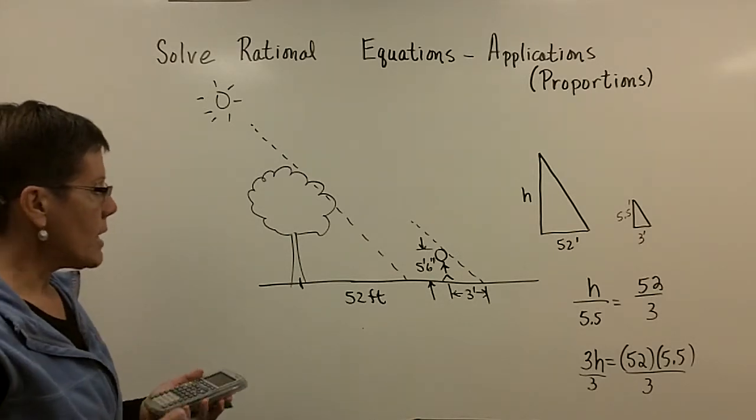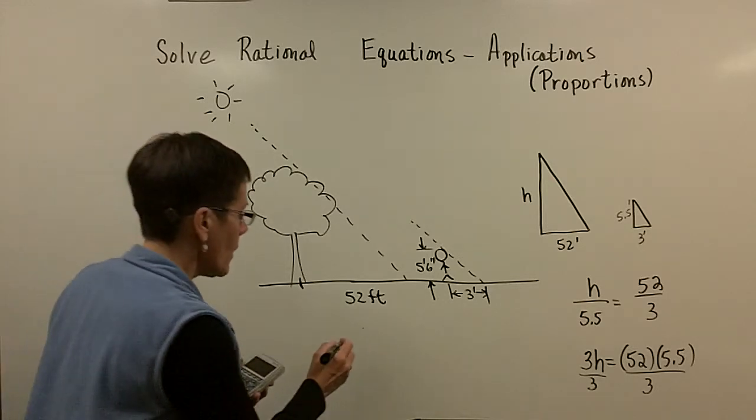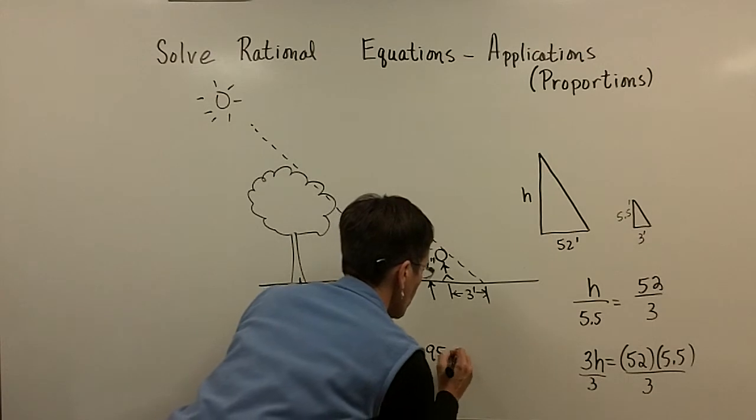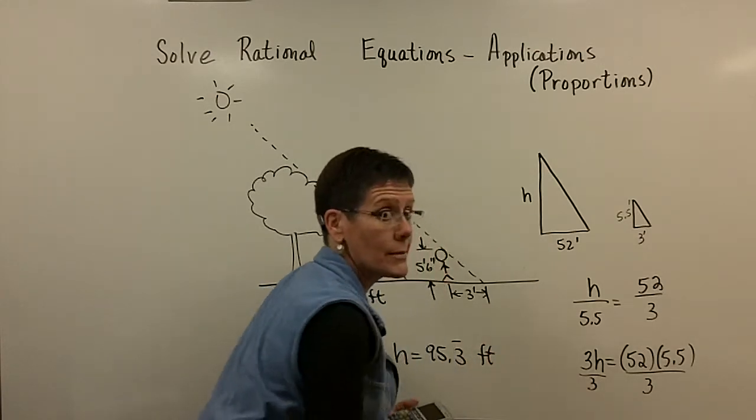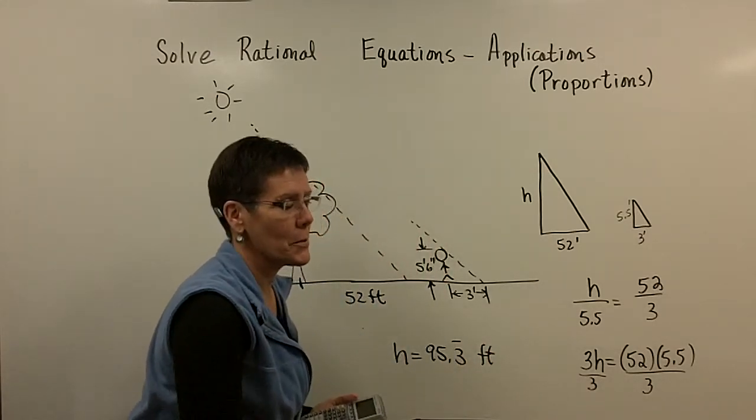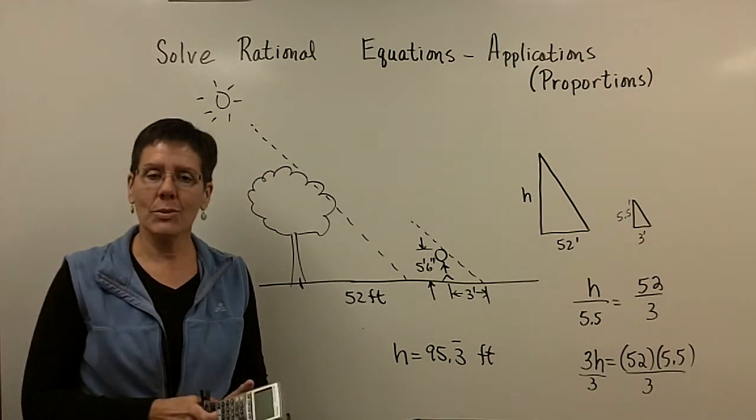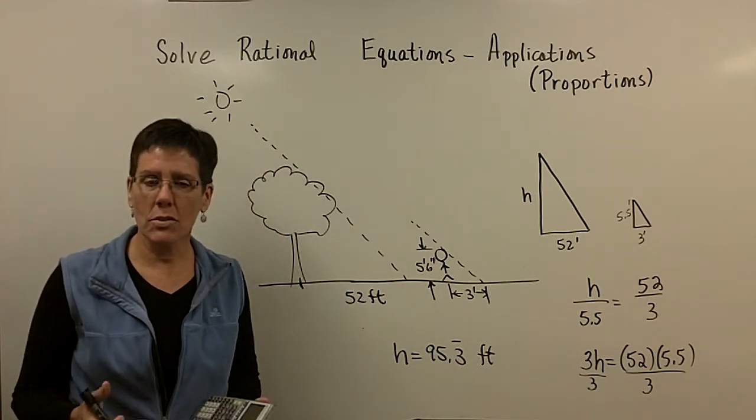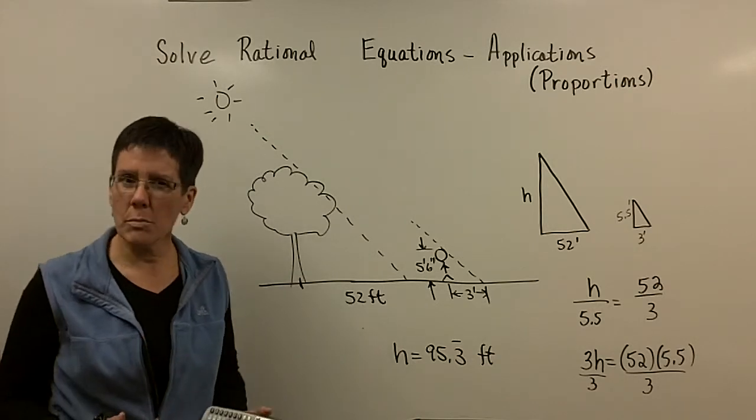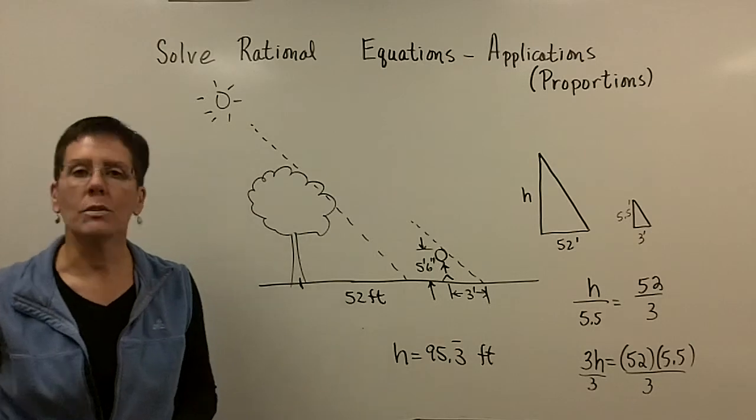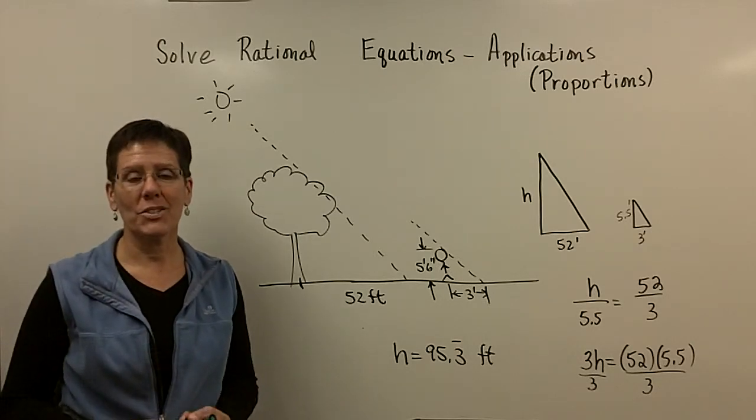And then when I divide that by 3, I find out that that tree, the height of that tree is 95.3 feet. Pretty tall tree. I just made up these numbers as I was standing in front of the camera. But nonetheless, I can use, I can solve rational equations in the form of a proportion when I have similar triangles as well. So all kinds of proportion related problems involving rational equations.